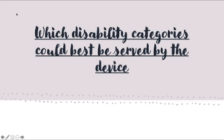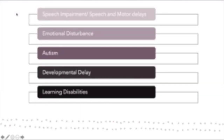Which disability categories could best be served by this device? This toy can be used for anyone in any classroom, but some specific categories include: a student with a speech impairment or motor delays — being able to talk with the stuffed animal is a fun, interactive way to use those speech muscles to better develop them. A student who may have an emotional disturbance, as it's sometimes easier for children to talk to a stuffed animal they can hug and pet, rather than talking directly to an adult. Students with autism, developmental delay, and learning disabilities could also benefit.